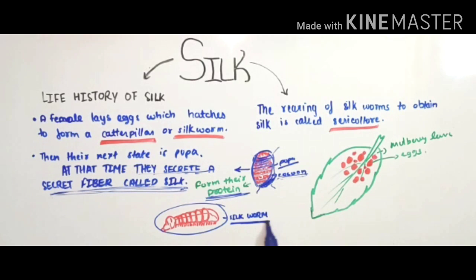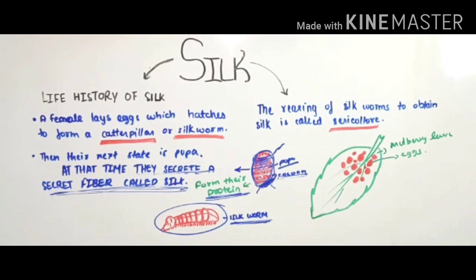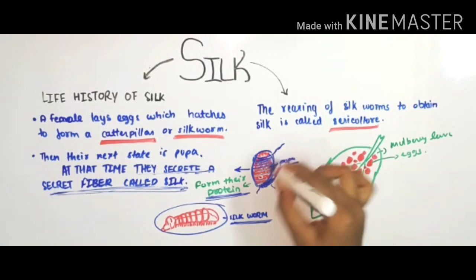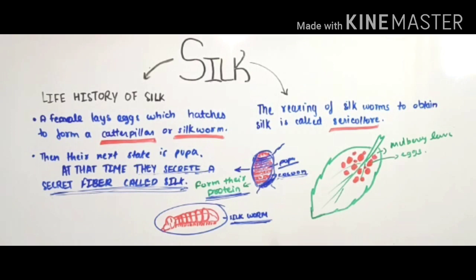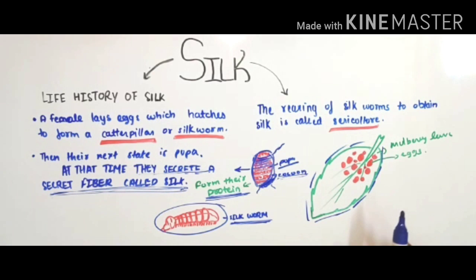There are many different types of silk, and different species of silkworms produce different types. Some examples are monga silk and kosa silk. The most common silk moth is the mulberry silk moth, which lays its eggs on mulberry leaves.